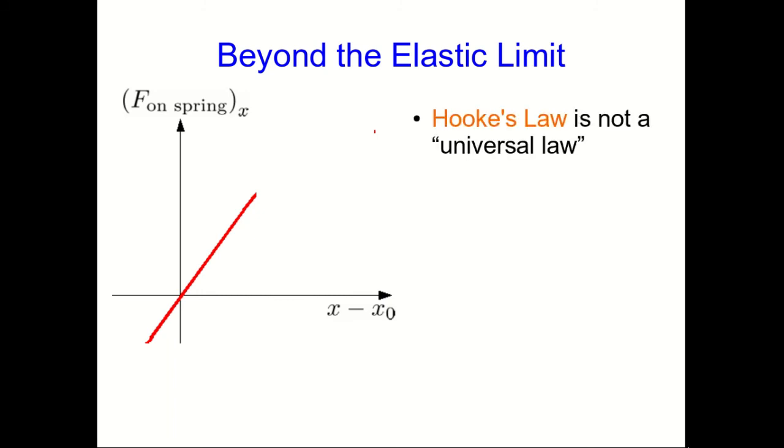However Hooke's law is not universal. You can push things too far and things deviate from the straight line that is what Hooke's law says. For example if you compress too much eventually the coils start getting in each other's way and the spring does what's called bottoming out and now a very large increase in the force leads to a very small change in the displacement of the end.